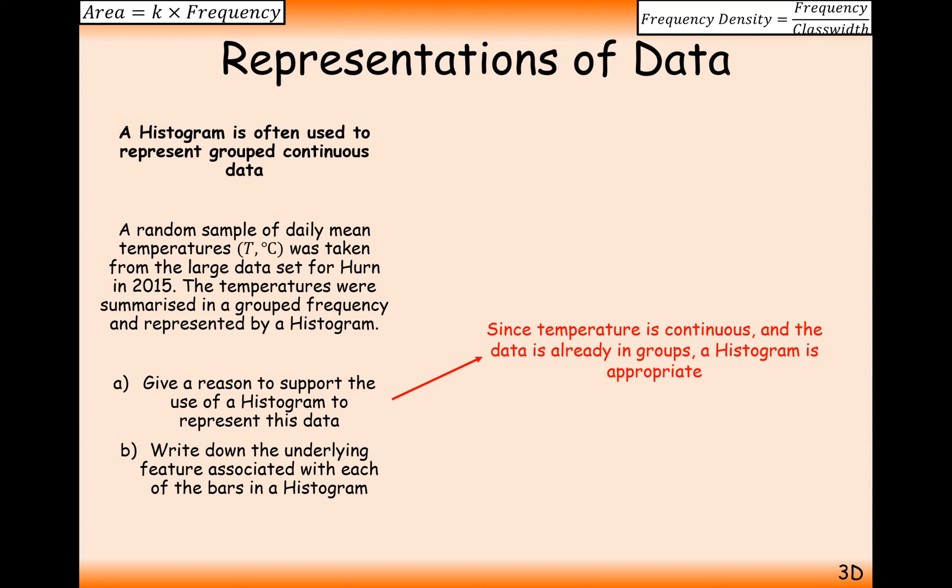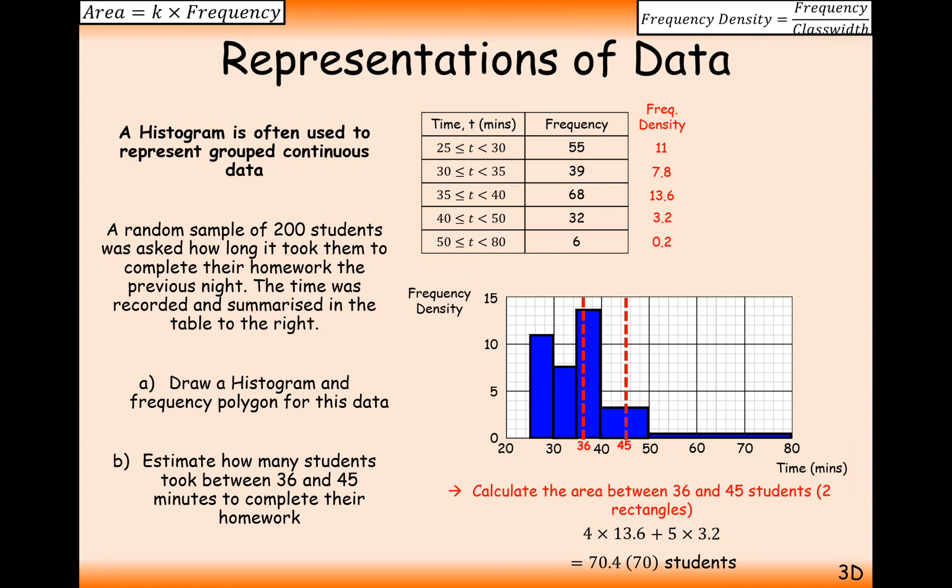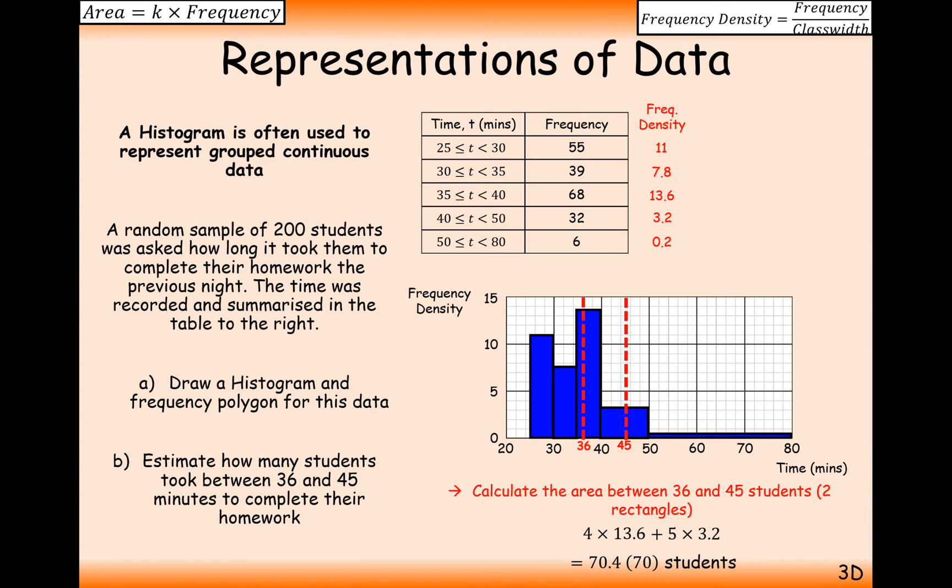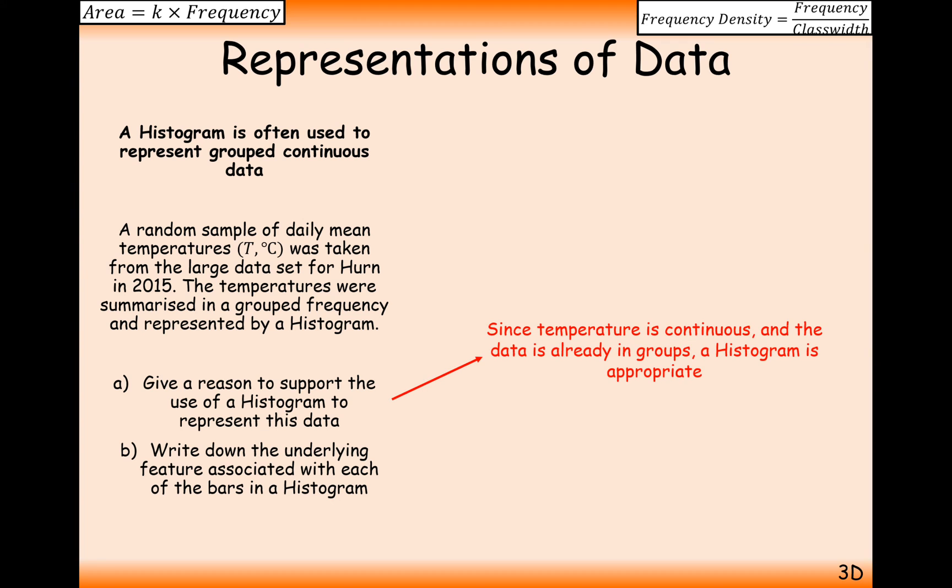Especially if the groups are not of the same width. If they have a different width on each of the frequency bands, then that's a good use of a histogram. For example, here where they have different widths on the grouped intervals here, a frequency diagram is probably not going to be best. Histogram is going to be better here. So write down the underlying feature of a histogram. The area of each bar is proportional to the frequency.